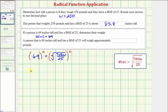69 squared equals 4761, and on the right side when we square the square root, this simplifies to just the radicand of 703 W divided by 25. Now we can clear the fraction by multiplying both sides by 25. 25 times 4761 equals 119,025, and the right side simplifies to 703 W.